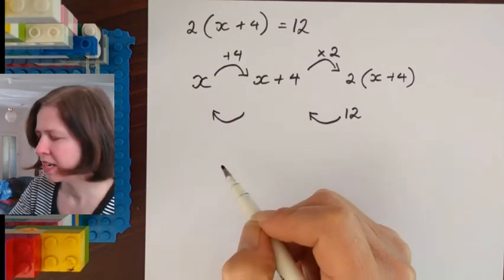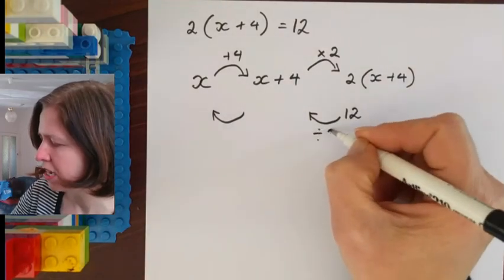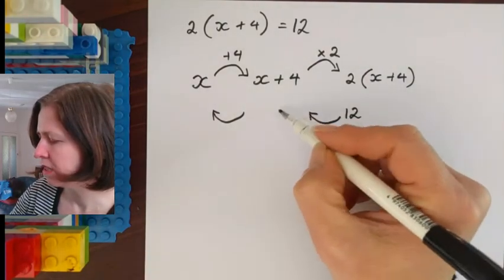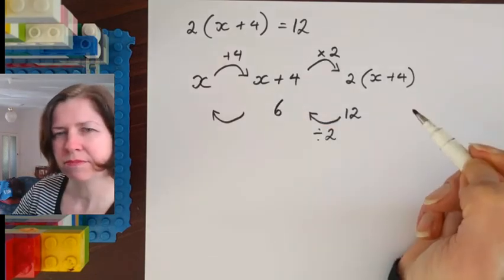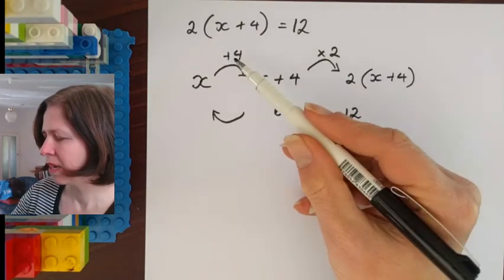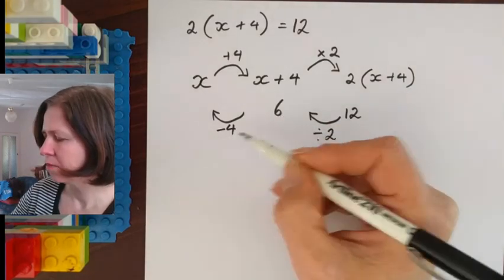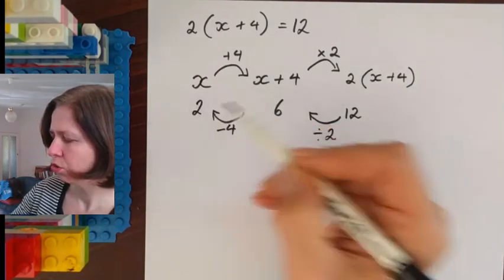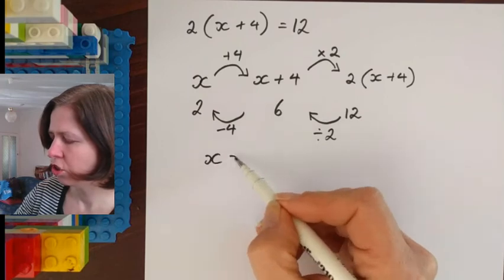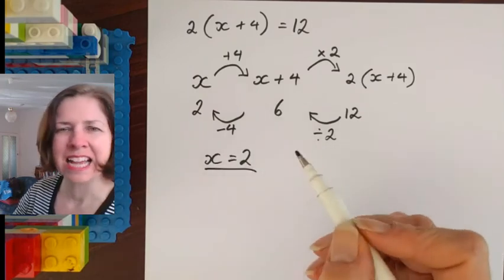So this is what I did. Divided by 2 here. So 12 divided by 2 is 6. And then plus 4 gives me minus 4 here. So 6 minus 4 is 2. So the solution that I found is x equals 2.